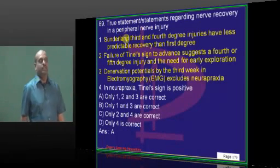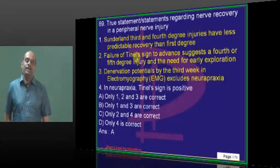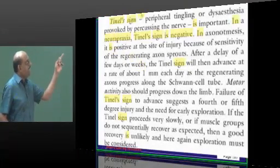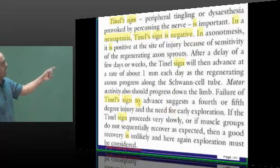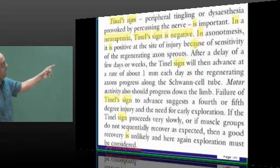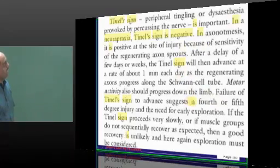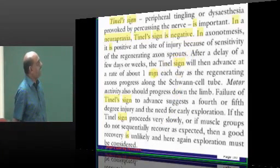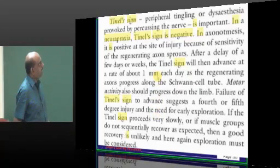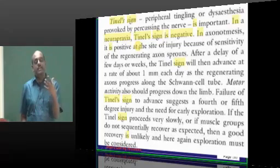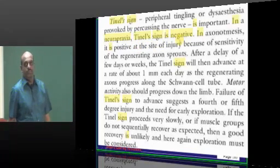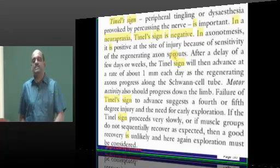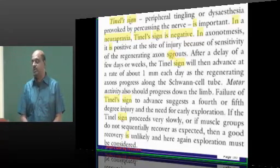Nerve recovery in peripheral nerve injury. Definitions of neuropraxia, neurotmesis, axonotmesis — everything you must be sure about. Tinel's sign — in which type of injury is it present? Tinel's sign typically occurs whenever there is any regeneration. In neuropraxia, Tinel's sign will be negative. Whereas in axonotmesis, Tinel's sign will be positive because there is re-sprouting. That re-sprouting leads to supersensitivity, which leads to development of the Tinel's sign.